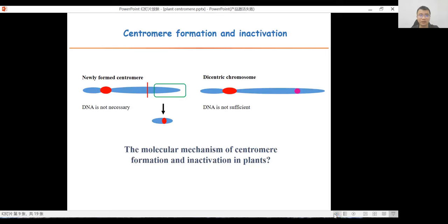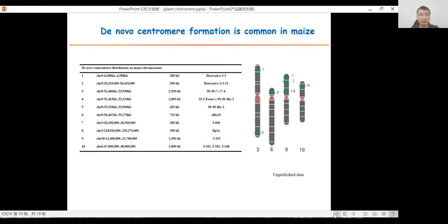Until now, we found that de novo centromeres form following the inactivation or deletion of an original centromere, suggesting that repetitive DNA sequences are not sufficient for centromere function. We want to know what is the molecular mechanism of centromere formation and inactivation in plants. We have identified many genomic loci in different chromosomes that combine with the centromere nucleosome to form de novo centromeres in maize.